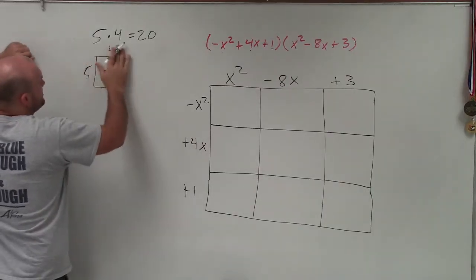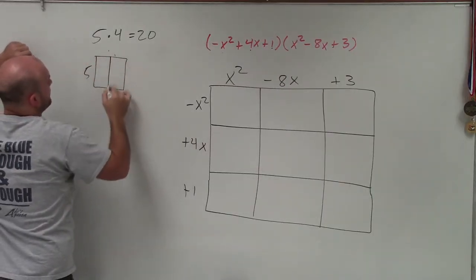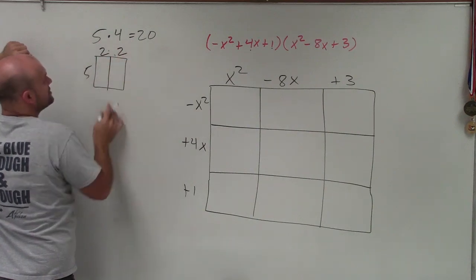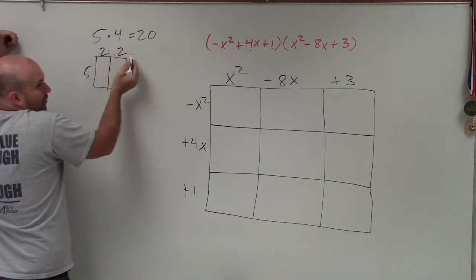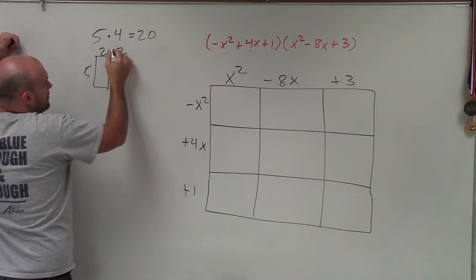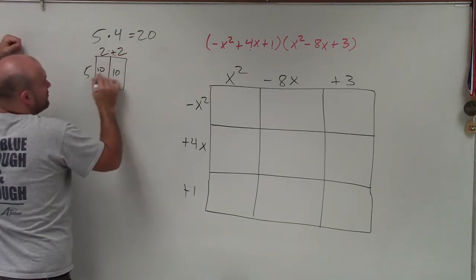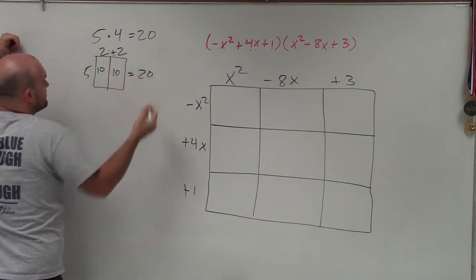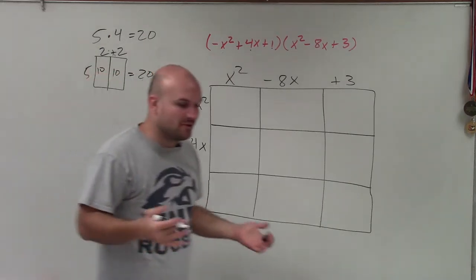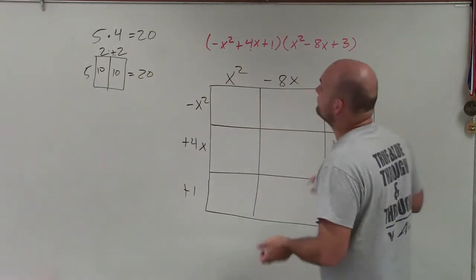Because for instance, I could also do something like this. If I did 2 and 2, because you could break up 4 into 2 plus 2. So then I did 5 times 2, which is 10, 5 times 2, which is 10. Well, 10 plus 10 is equal to 20, which is the exact same answer. So it works if we break it up.